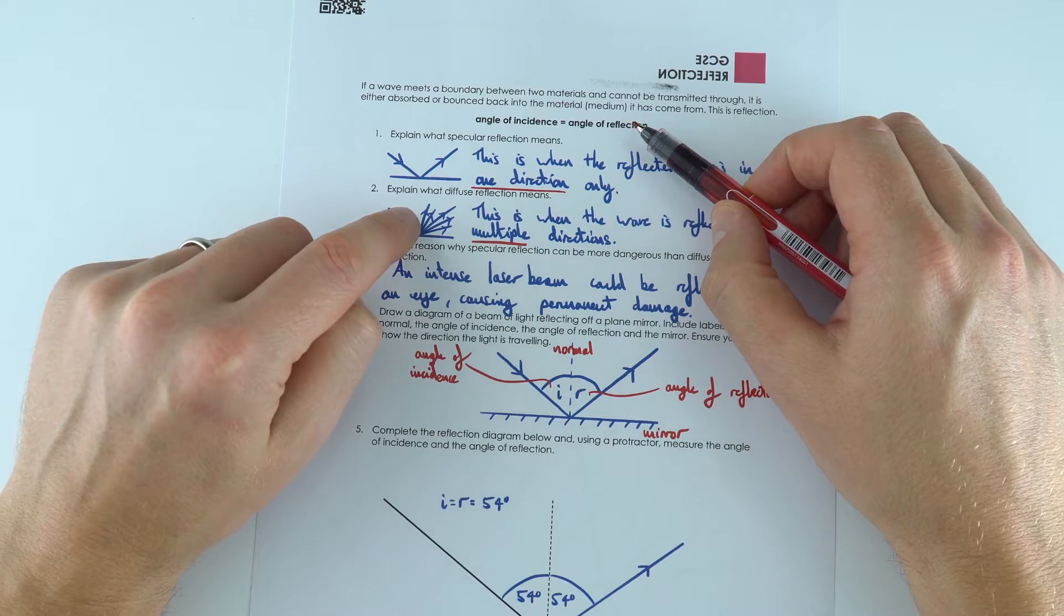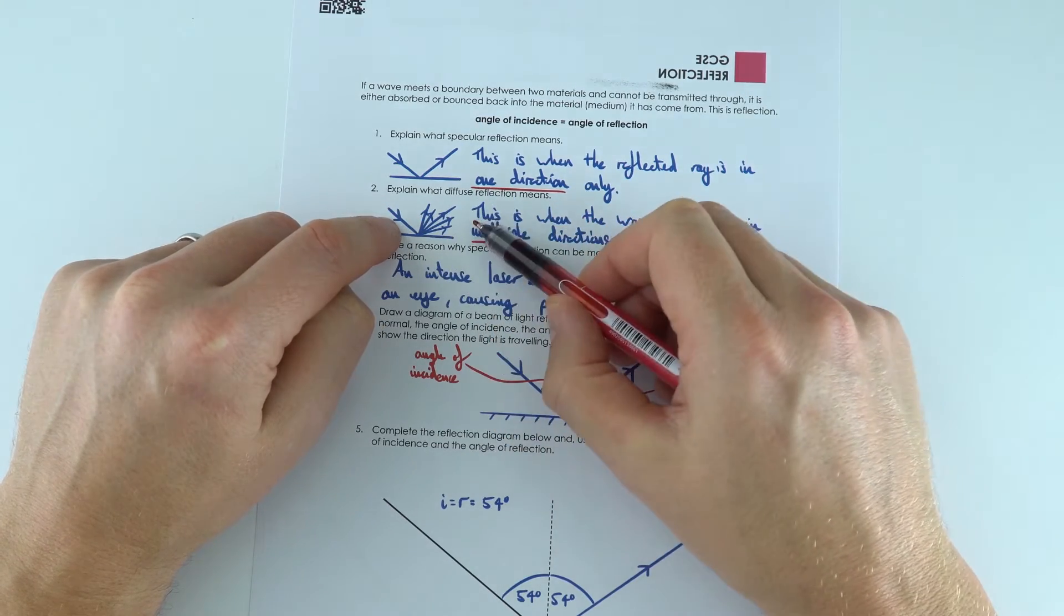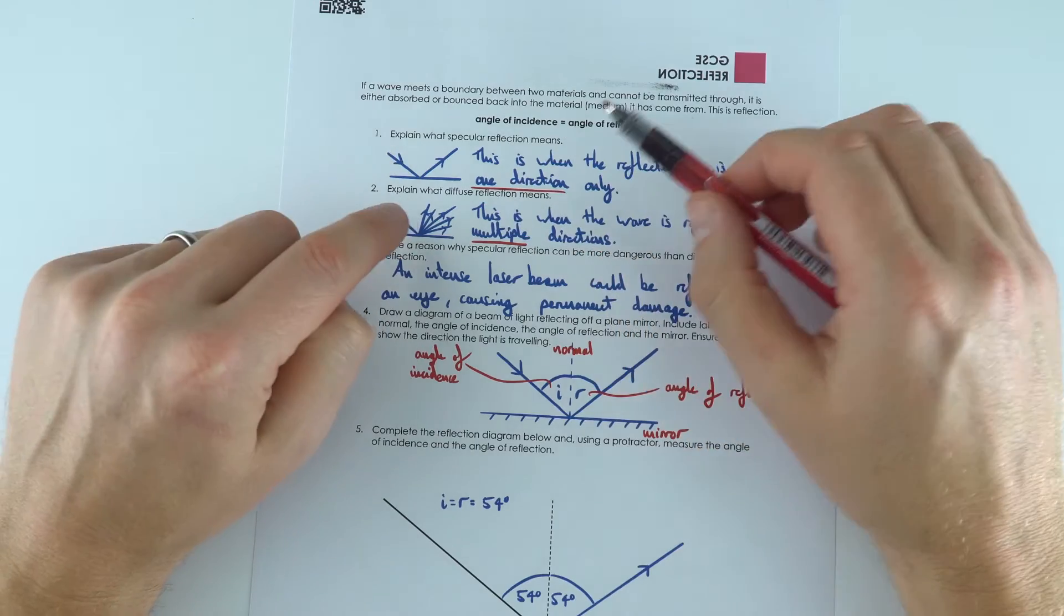There is another type called diffuse reflection, where the light diffuses into all of these different directions, often when it hits a rough surface.